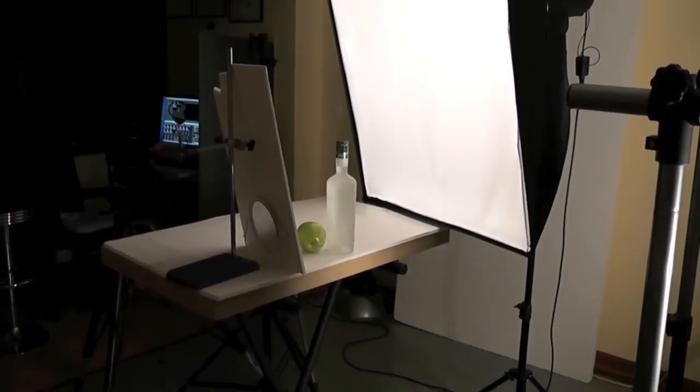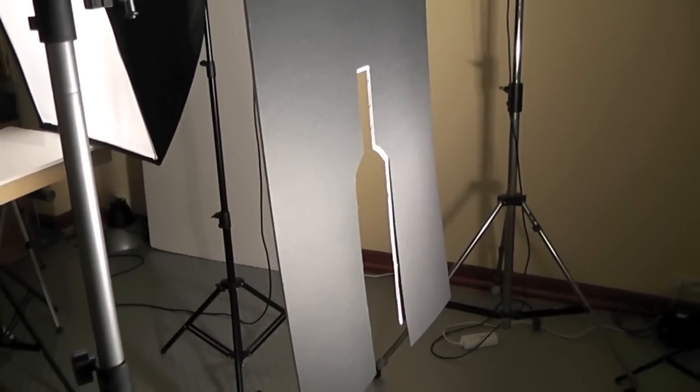We can see the bottle. We can see the soft box. We've got the black card on the back of the white panel with a hole in it and the light that's coming through it.